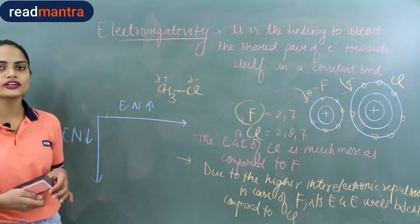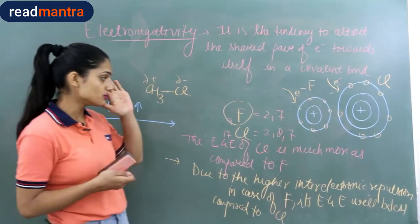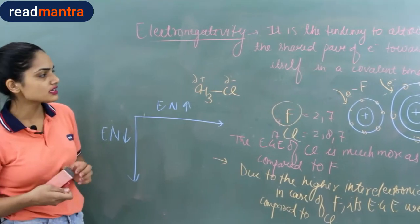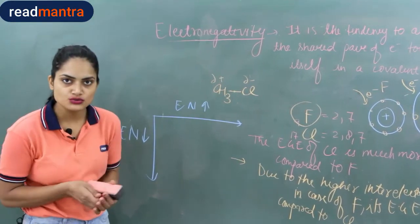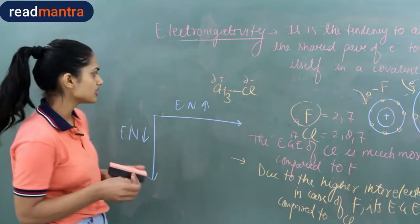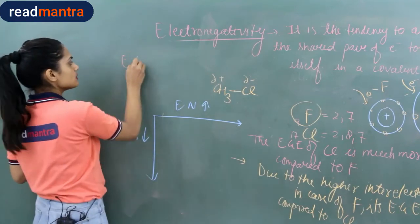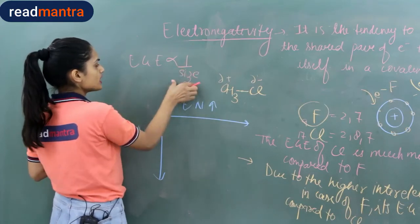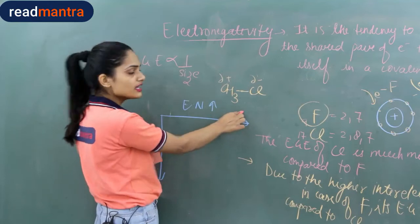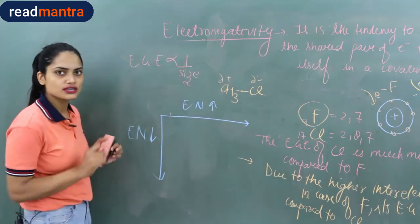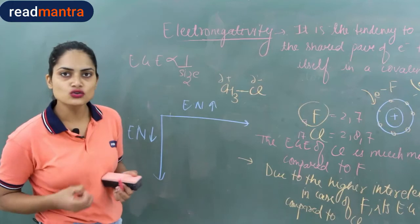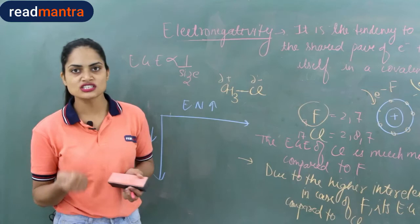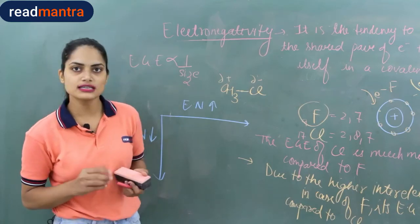To summarize key observations: electron gain enthalpy is inversely related to atomic size — smaller size means higher (more negative) electron gain enthalpy. Atoms with stable electronic configurations, such as noble gases or half-filled orbitals, will not gain electrons easily; their electron gain enthalpy will be a positive value.